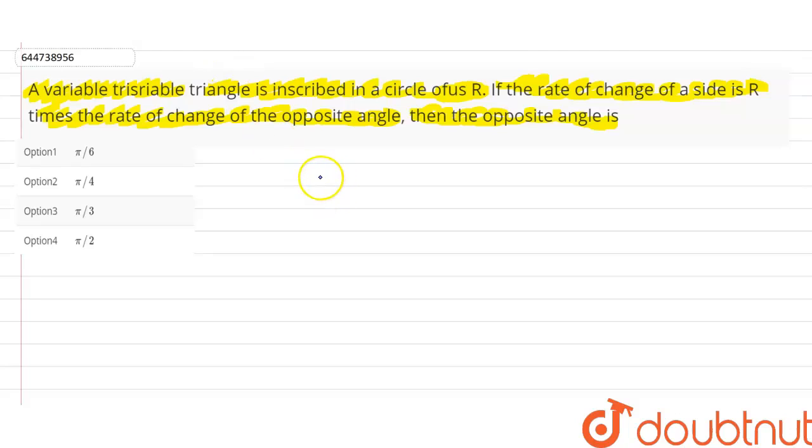By sine rule, we know that a over sin A equals 2R, where R is the radius of the circumscribed circle.